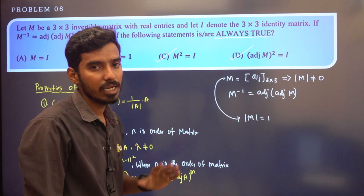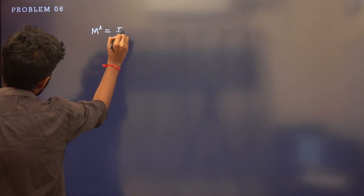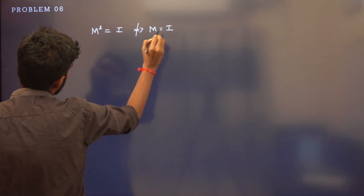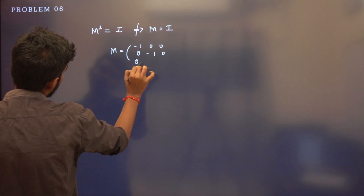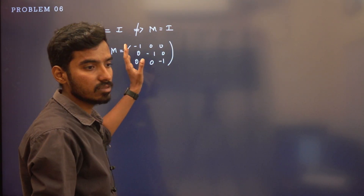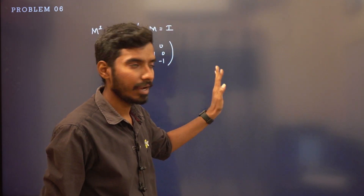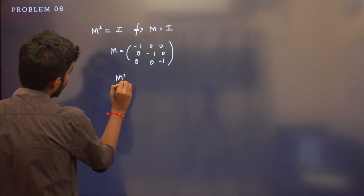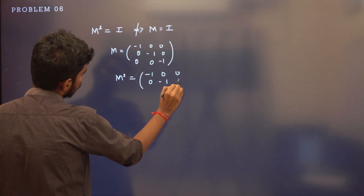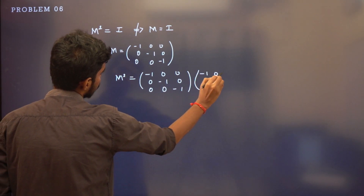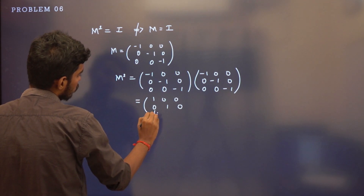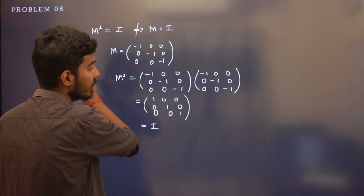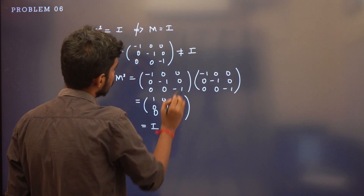But M² = I does not imply that M itself has to be the identity matrix. For example, take M = diag(−1, −1, 1), which is not the identity matrix. But M² = diag(1, 1, 1) = I. So the option that M equals the identity matrix is not always true.